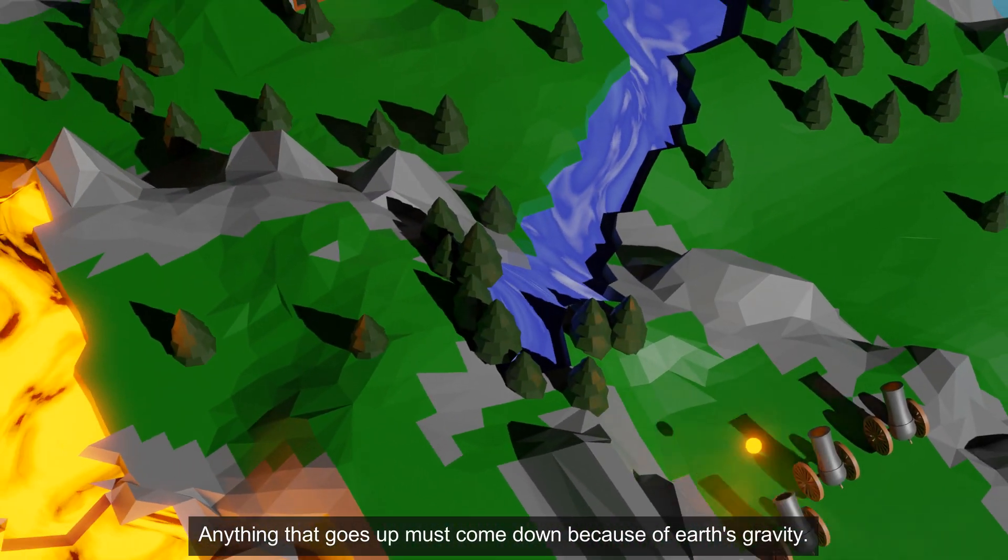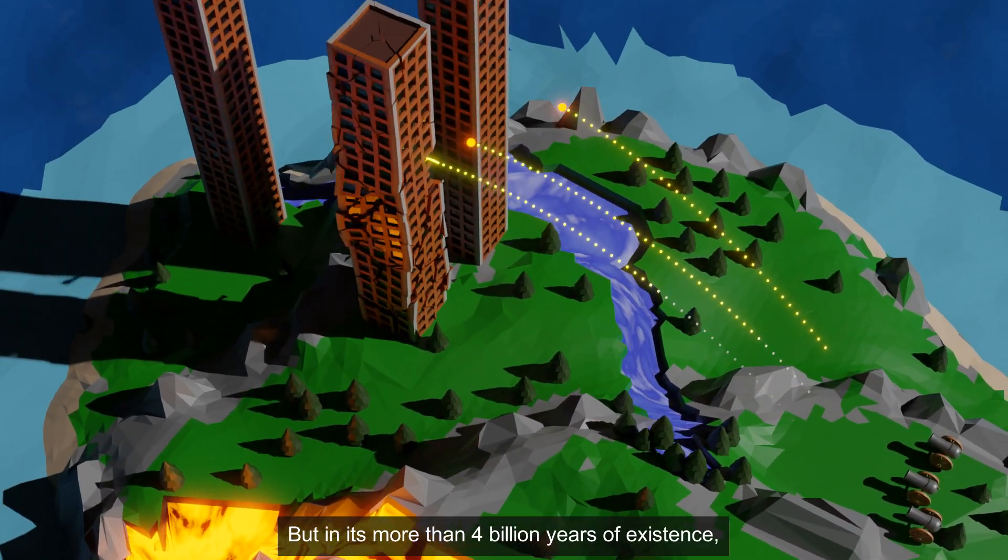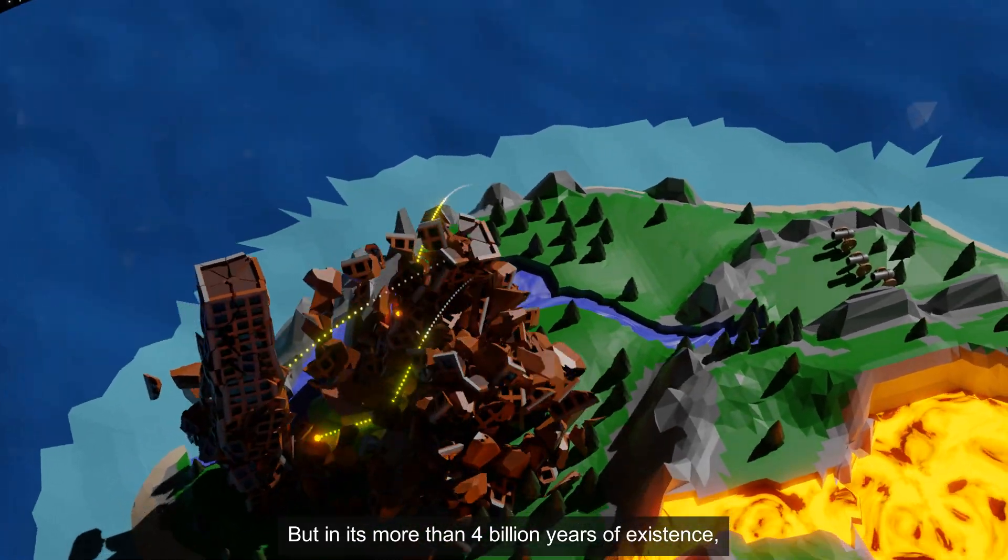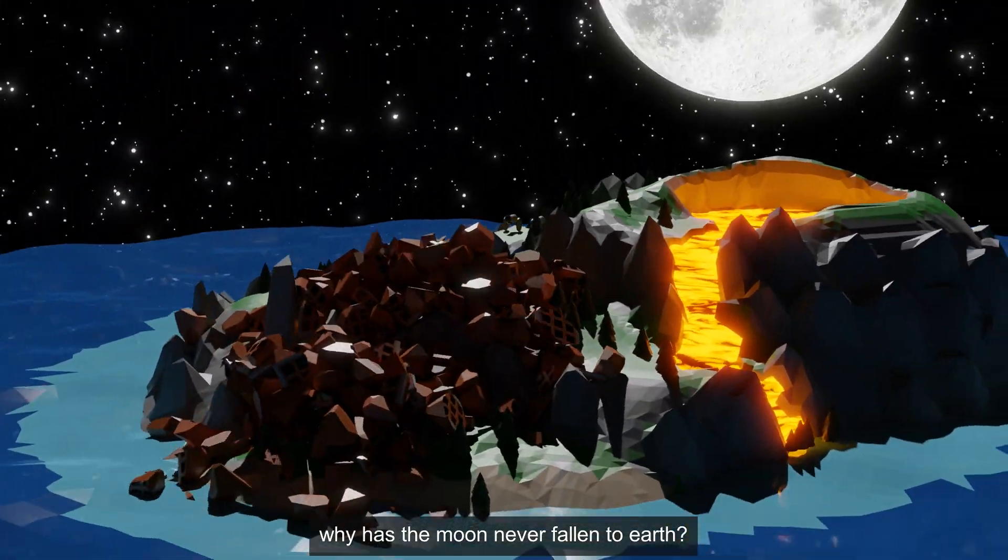Anything that goes up must come down because of Earth's gravity. But in its more than 4 billion years of existence, why has the Moon never fallen to Earth?